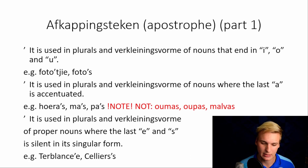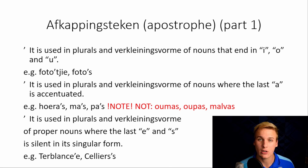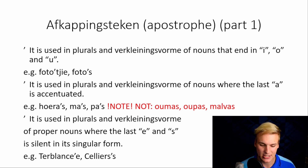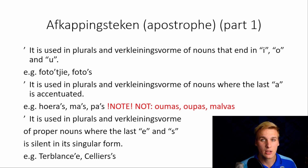The afkappingsteken, or the apostrophe. It is used in plurals and diminutives of nouns that end in i, o, and u. For example, kwêtuki — a little photo — and kwêtuus. You add an apostrophe s to make it plural. It is also used in plurals and diminutives of nouns where the last a is accentuated. For example: buras, maas, baas. You can hear the A is prominently pronounced, and therefore it gets an apostrophe s.